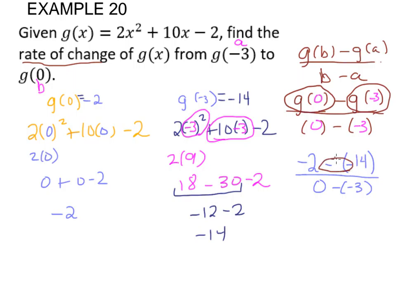Simplify our signs. Negative negative is a positive. Negative 2 plus 14 is 12. 0 minus a minus 3 turns into a positive, so that's 3. And then 12 over 3 is 4. So the rate of change equals 4.